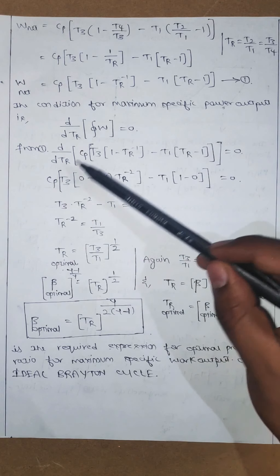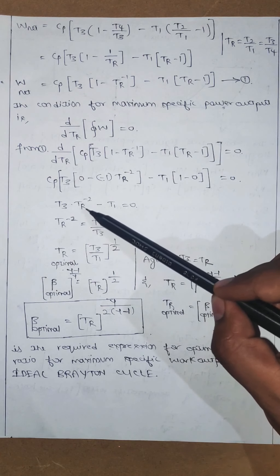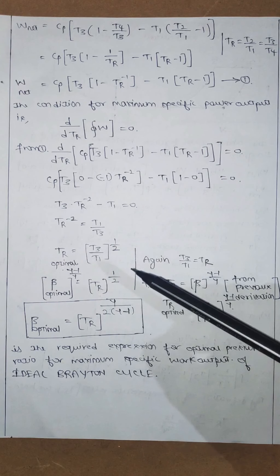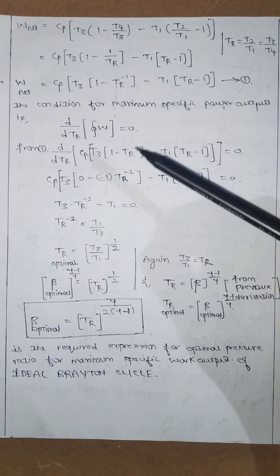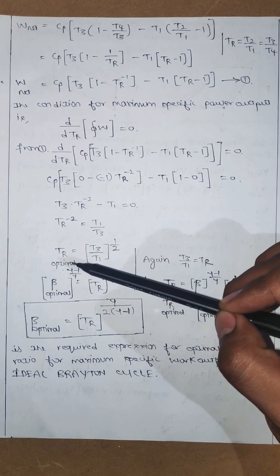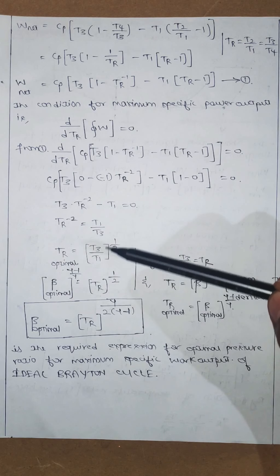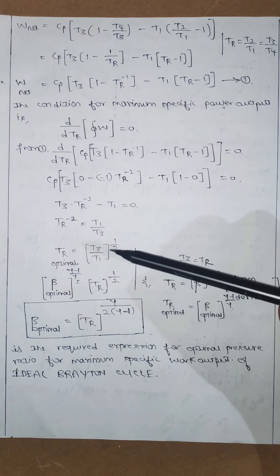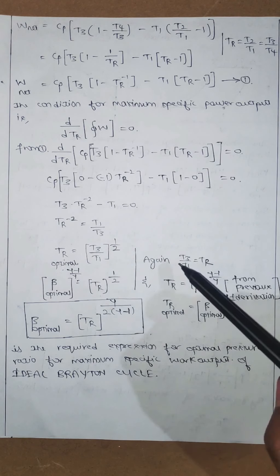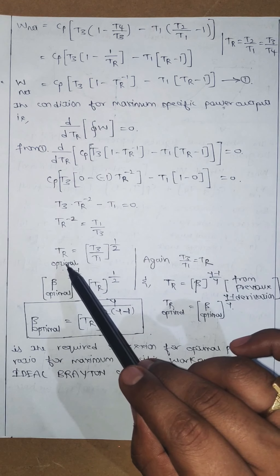Transferring Cp to the other side, we are left with T3 times TR^(-2) minus T1 equals zero. Therefore TR^(-2) = T1/T3, which means TR_optimal² = T3/T1. This TR is obtained by applying the condition of maximum specific power output, so it is the optimal TR for which maximum specific work output is obtained. Reciprocating gives TR_optimal = (T3/T1)^(1/2).